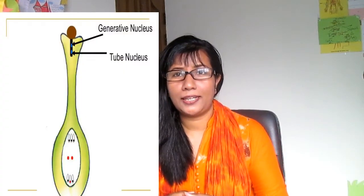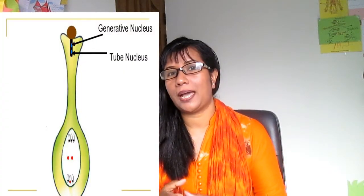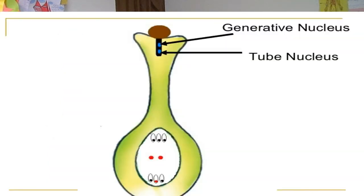These cells mature into pollen grains, each surrounded by a protective wall made up of a tough exine and a thinner inner layer. One of the haploid nuclei is called the tube nucleus and the other is the generative nucleus. These are the male gametes.